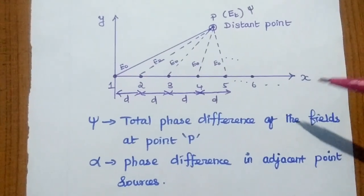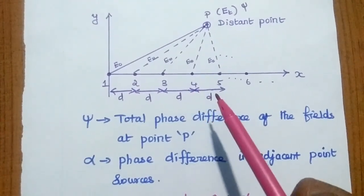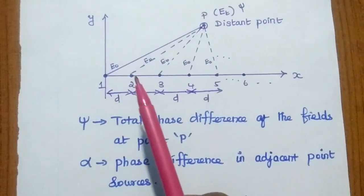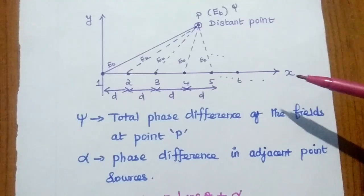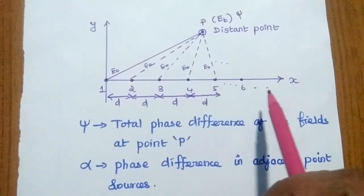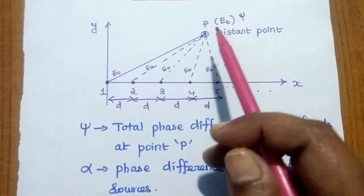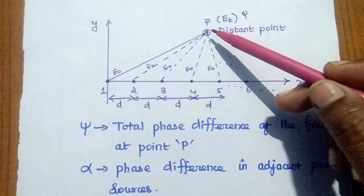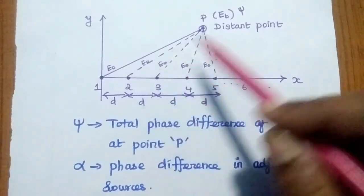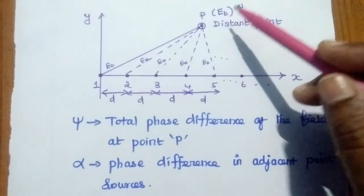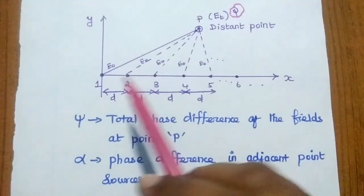For analyzing the broadside array, we consider a diagram with n isotropic point sources equally spaced, each fed with currents of equal magnitude and in phase. The spacing between elements is D. We consider a distant point P because we are analyzing in the far-field region. Each element radiates with electric field E₀, the total electric field at the distant point is ET, and the total phase difference is ψ, where α is the adjacent phase difference.